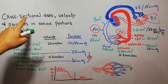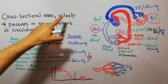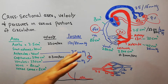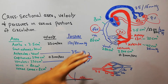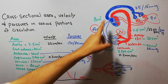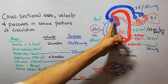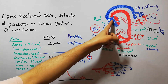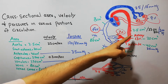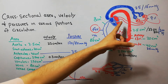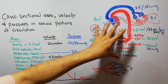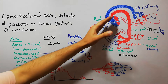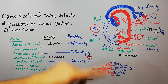Today we are going to discuss the cross-sectional area, velocity, and pressure in different parts of the circulatory system. The circulatory system has two circuits: the systemic circuit and the pulmonary circuit. The pulmonary circuit takes blood to the lungs where it gets oxygenated and brings it back to the heart, which then pumps it to the whole body, where tissues consume oxygen and nutrients before deoxygenated blood returns to the right side of the heart.